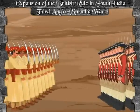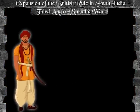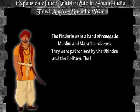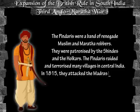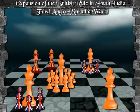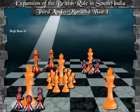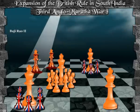Third Anglo-Maratha War: The Third Anglo-Maratha War was the final and decisive conflict between the British and the Marathas. The main bone of contention was the Pindaris — a band of renegade Muslims and Maratha robbers patronized by the Scindias and the Holkars. The Pindaris raided and terrorized many villages in central India. In 1815, they attacked the Madras Presidency and destroyed 300 villages. The British declared war against Bajirao II as well. Bajirao II led a war against the British with the help of the Pindaris, but they were finally defeated at the Battle of Ashti.